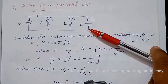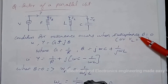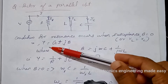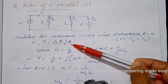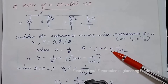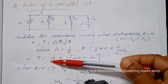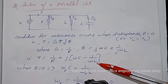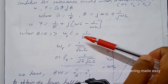Consider the parallel RLC circuit shown. The condition for resonance occurs when susceptance B equals 0, or XL equals XC. We have admittance Y equal to G plus jB, where G is the conductance and B is the susceptance. G equals 1 by R, and B equals j·omega·C plus 1 by j·omega·L. We can write admittance Y equal to 1 by R plus j times (omega·C minus 1 by omega·L).